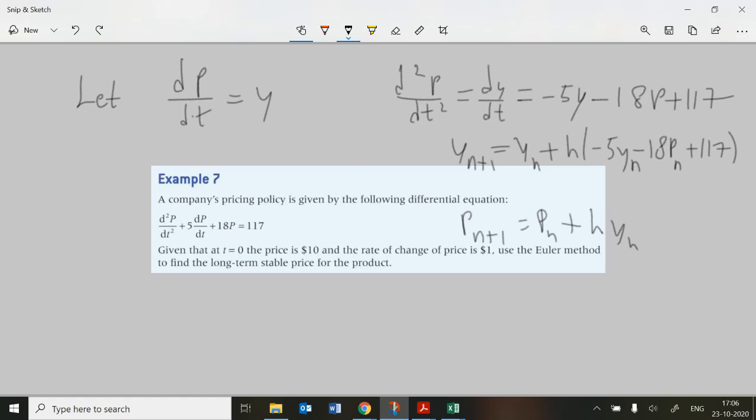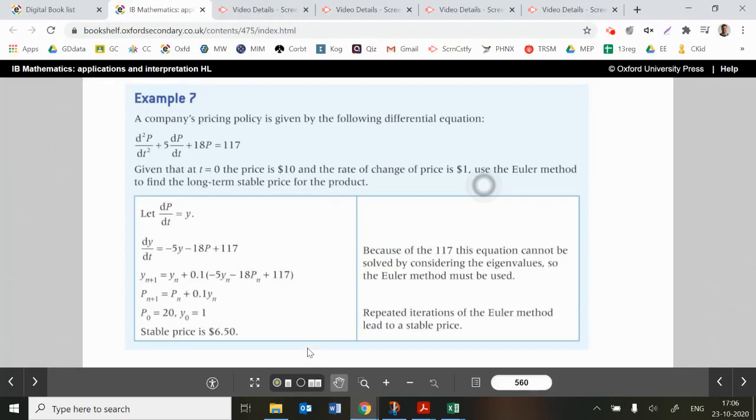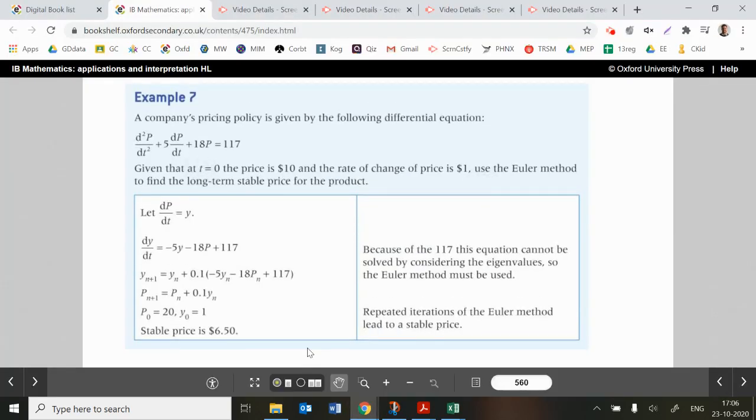Okay so now we've got an extremely similar structure to the previous questions and again let's just have a look at what they say we should let h equal to. So they've said given that t is equal to 0, the initial conditions are that the price is $10 and the rate of change of price is $1 so that's going to be your dp/dt or y. So we've got y there and we've got p and then use Euler's method to find the long-term stable price for the product.